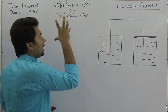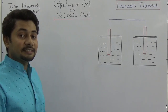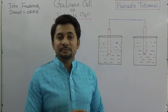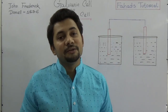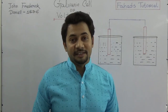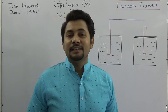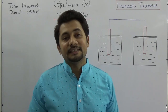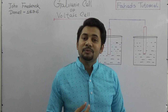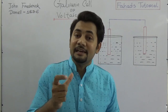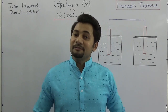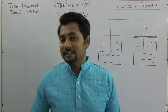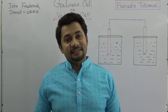So how does this voltaic or galvanic cell work? Before we explain it, we need to know the name John Frederick Daniel, who invented these cells in 1836. That is why it is named after him — we can call it a galvanic cell, voltaic cell, or Daniel cell.